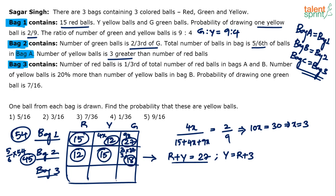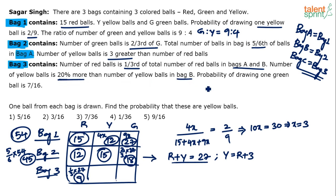For bag three: red balls = one-third of total red balls in bags A and B = one-third of (15 + 12) = one-third of 27 = 9. Yellow balls are 20% more than yellow balls in bag B. Bag B had 15 yellow, so 20% of 15 = 3, giving 15 + 3 = 18 yellow balls in bag three.